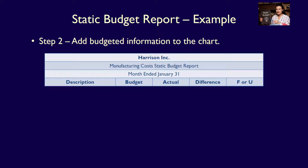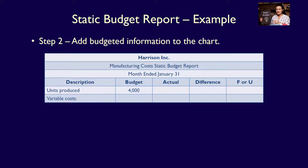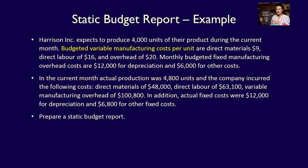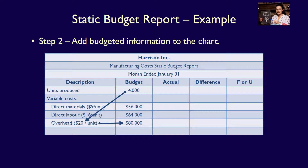Now we move on to Step 2: add all of the budgeted information. We'll start with the level of activity — Units Produced — which is the base we will use to calculate each of the total variable costs. Budget is 4,000 units. Under Variable Costs, the budgeted variable costs include Direct Materials $9, Direct Labor $16, and Overhead $20, all per unit. Calculating: 4,000 units × $9 = $36,000 for direct materials; 4,000 × $16 = $64,000 for direct labor; 4,000 × $20 = $80,000 for variable overhead. Total Variable Costs: $36,000 + $64,000 + $80,000 = $180,000.